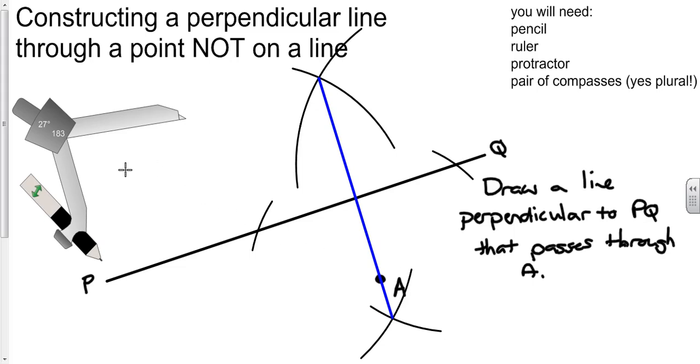Now, there's no way you remember that unless you practice it yourself. So get yourself a line, draw a random point away from it and see if you can produce this process. And get yourself a perpendicular line that passes through a point and is perpendicular to the line you've already drawn. Best of luck.